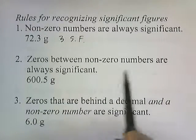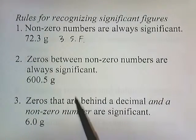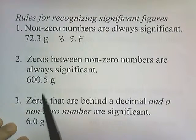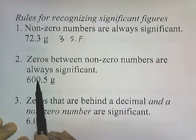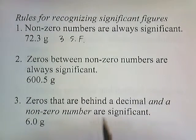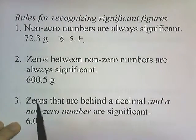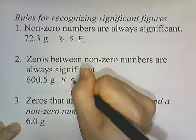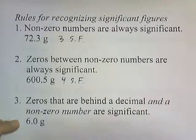Zeros between non-zero numbers are always significant. So these zeros are in between two regular numbers, so we have four significant digits.